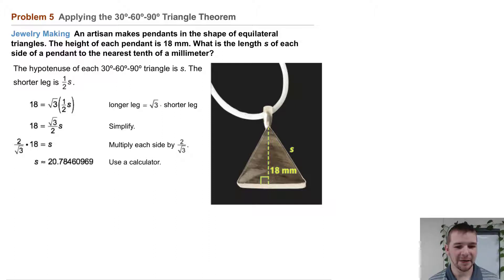Since this is a real-life application problem, we probably don't want to report our answer in simplest radical form, so we use a calculator. We find that s is approximately equal to 20.7846 and so on, so we can state each side of a pendant is about 20.8 millimeters long.